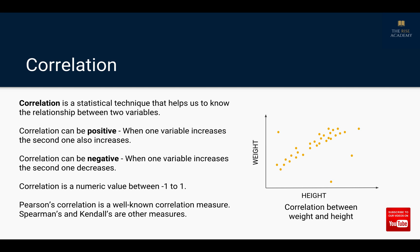As we can see on the figure on the right side, it's a scatter plot that shows the relationship between weight and height. As height increases, weight also increases. Although there are some outliers, in general there is a linear positive correlation between height and weight. When the value of correlation is close to either positive one or negative one it shows a very strong positive or negative relationship between two variables, whereas if the value is close to zero that means a very weak correlation between two variables.